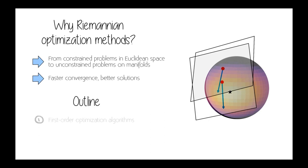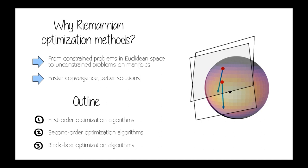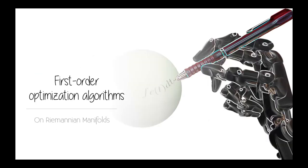Today I'm going to cover three topics. The first is first-order optimization algorithms — algorithms that take into account only the gradient of our function. Second, second-order algorithms where we also take the Hessian information into account. Finally, I'll briefly cover black-box optimization algorithms, namely Bayesian optimization on Riemannian manifolds.